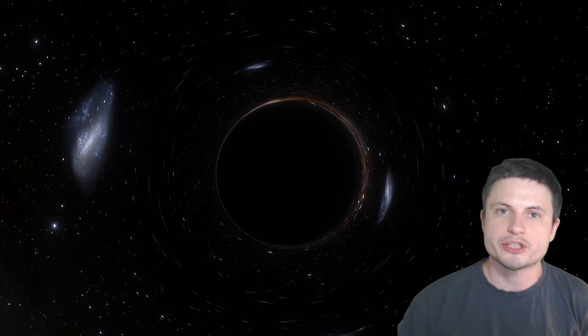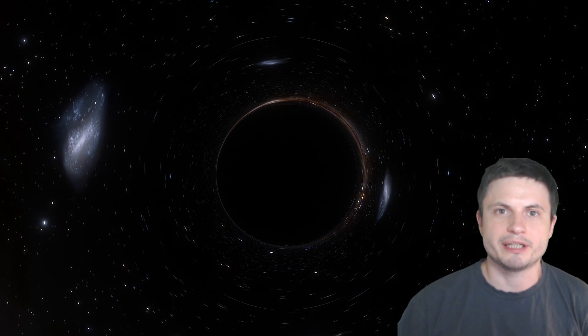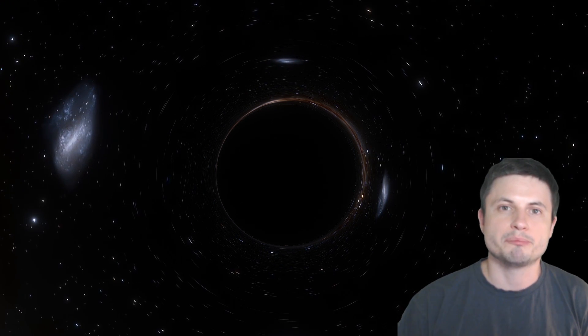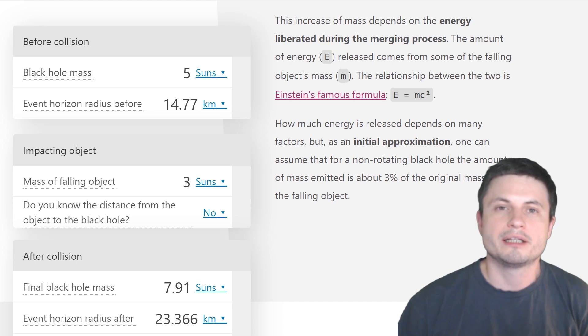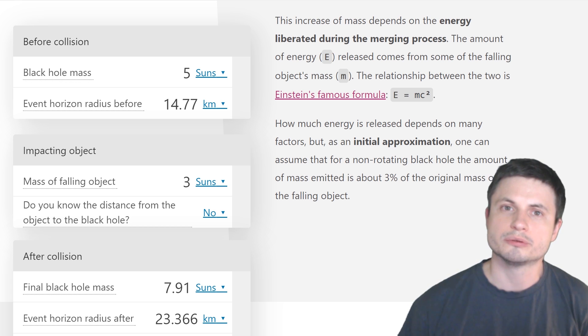And to help us answer all of these questions, a particle physicist by the name of Alvaro Diaz created a beautiful and relatively simple calculator that you can find in the description below, that allows us to quite easily find out the parameters of a typical black hole, if something collided with it, and also the amount of energy released during this collision.